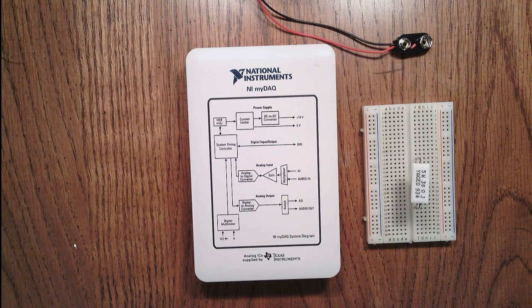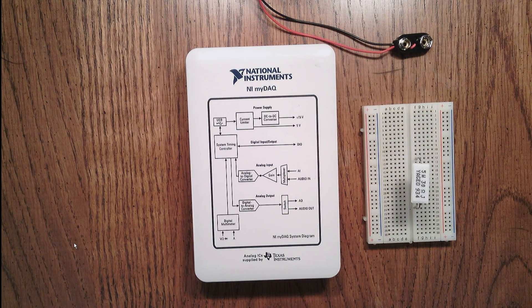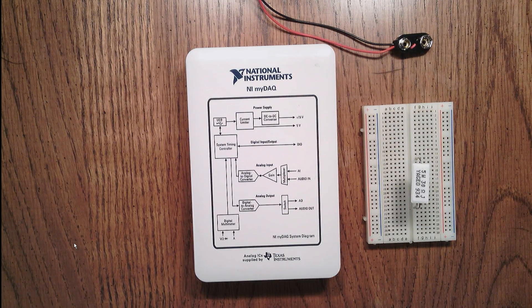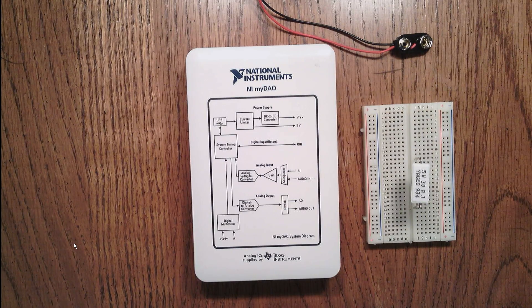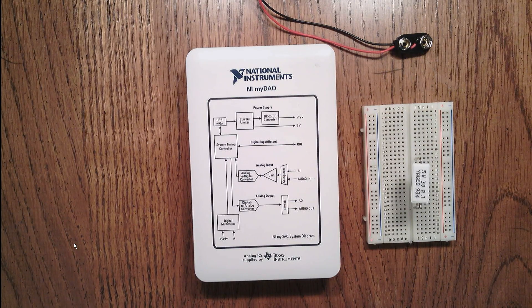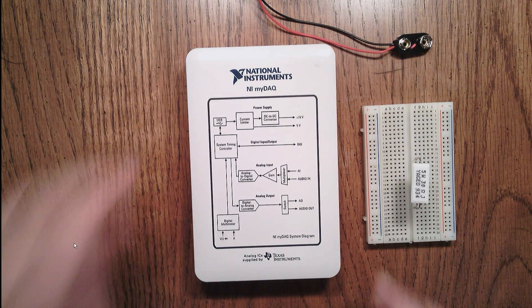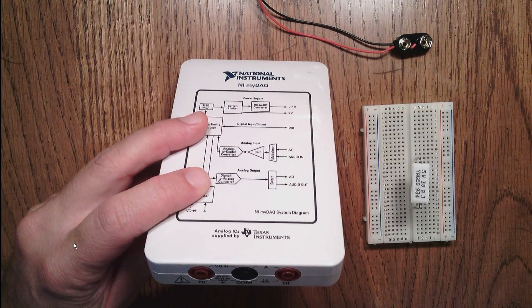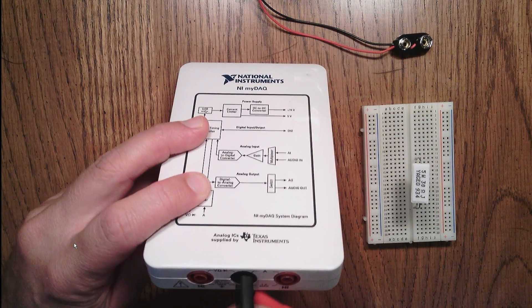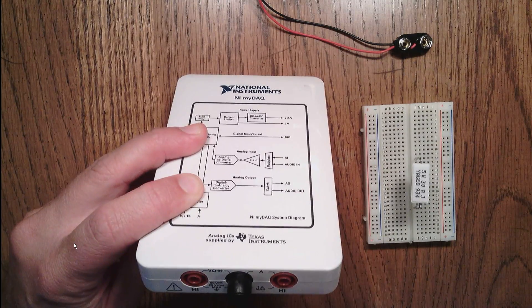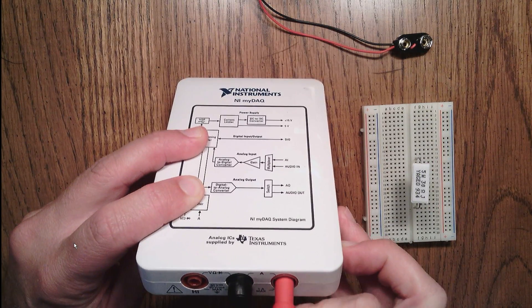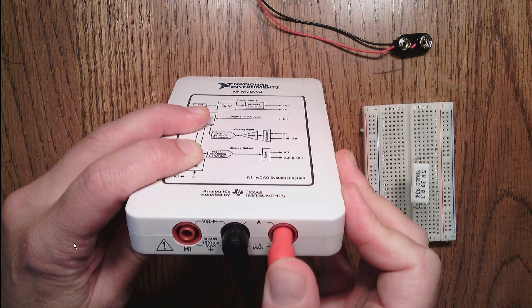Because I want to measure current, I'm first going to situate my leads in the National Instruments MIDAC instrument to measure current using the digital multimeter feature. To do so, I'm going to look at the bottom of the MIDAC device and insert my leads into the appropriate terminals so that we can measure current.